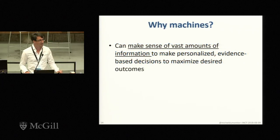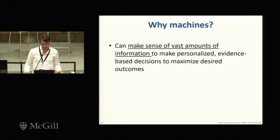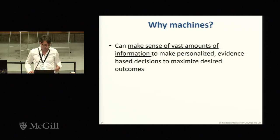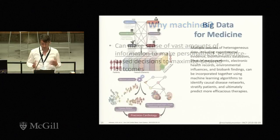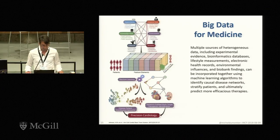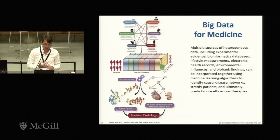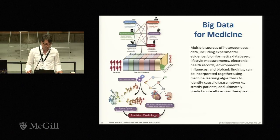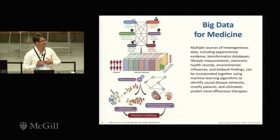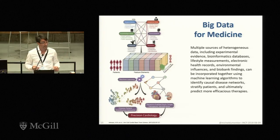Why machines? People are obviously super important in this equation, but here are two arguments for machines. First, machines can make sense of a vast amount of information far beyond what we can, and make personalized and evidence-based predictions or decisions to maximize outcomes. This is one example for cardiology, where the idea is to take information from hospital data, environmental data, biobank data, lifestyle data, our general knowledge about biology and biochemistry, and put all of this simultaneously into some kind of feature matrix from which machines will learn patterns too subtle for us to distinguish.